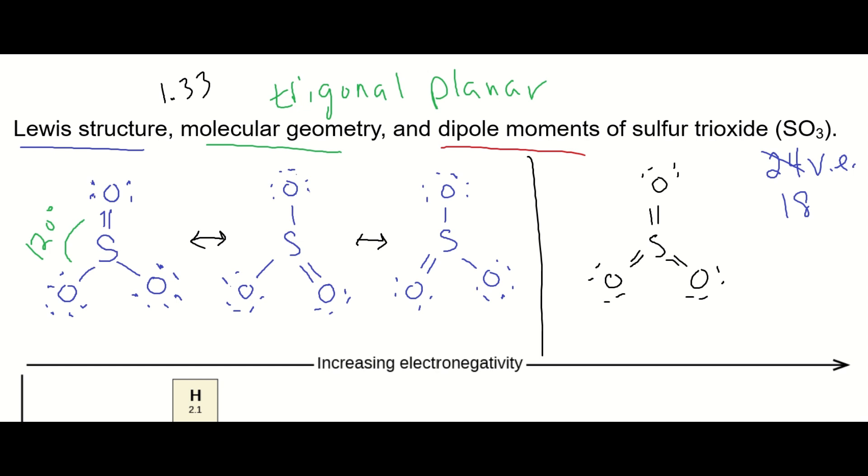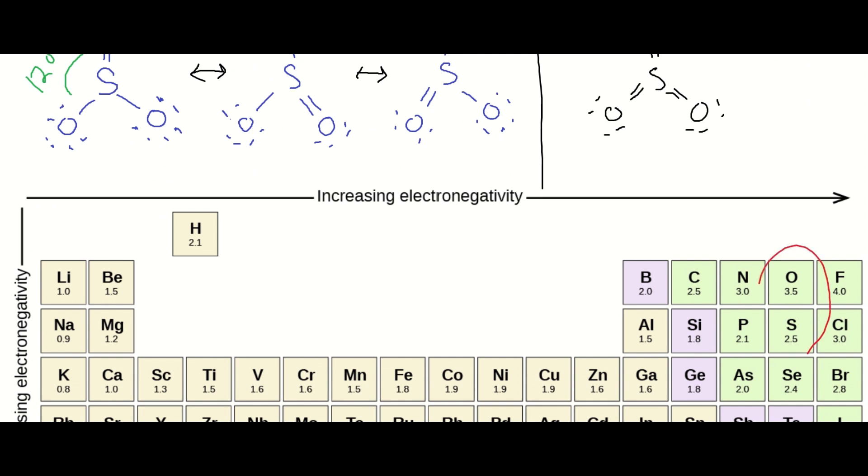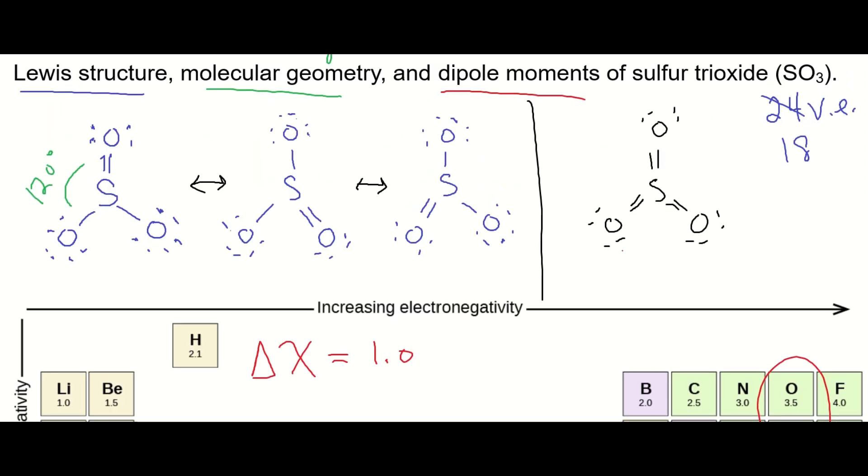Finally, let's take a look at the electronegativity difference between the sulfur and the oxygen. And you'll see that there's a delta chi, or a difference in electronegativity between the sulfur and the oxygen of one. So each of these, because oxygen is more electronegative, each of these bonds are polar bonds. So the oxygen side will take on a partially negative charge. And then the sulfur is going to take the opposite charge, because the molecule is neutral.